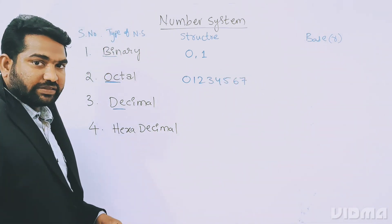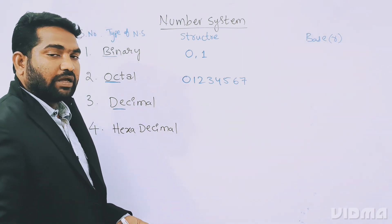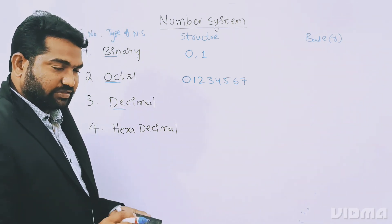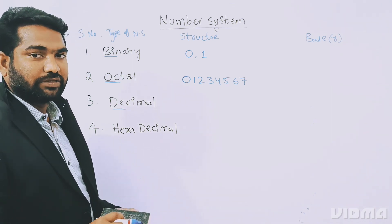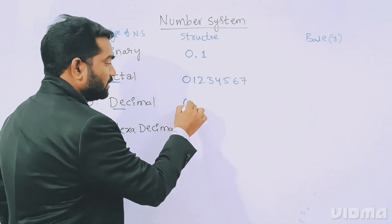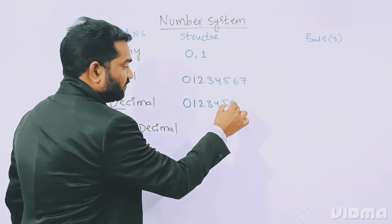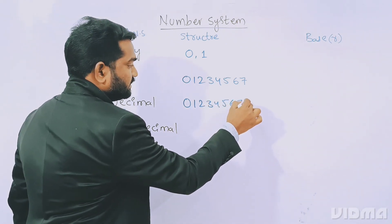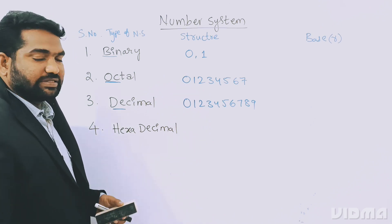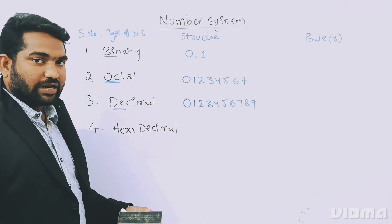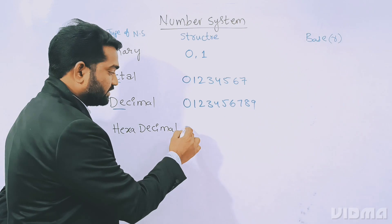Coming to decimal number system — the name itself indicates ten values. Those ten values are: zero, one, two, three, four, five, six, seven, eight, and nine. And coming to hexadecimal number system, there are sixteen values.